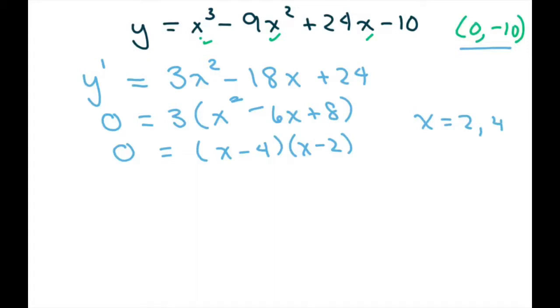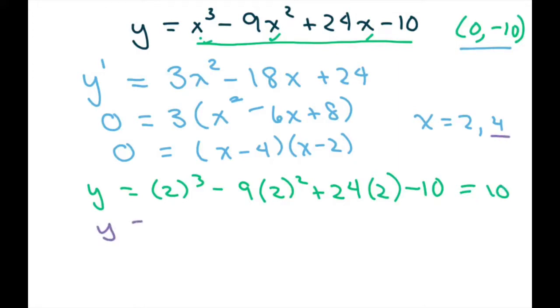Now plug back into the original equation to get the y-coordinates of the critical points. When you plug it in, you're going to get y equals 2 cubed minus 9 times 2 squared plus 24 times 2 minus 10. When you plug that in, you're going to get equals 10. Now let's do the 4. So y equals 4 cubed minus 9 times 4 squared plus 24 times 4 minus 10, and that's going to give you 6.